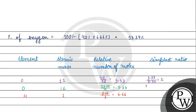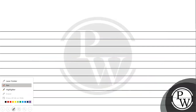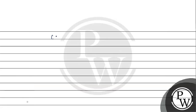Dividing by the smallest mole ratio value of 3.33: carbon gives 3.33/3.33 = 1, hydrogen gives 6.66/3.33 = 2, and oxygen gives 3.33/3.33 = 1. So the ratio of carbon to hydrogen to oxygen is 1:2:1, giving the empirical formula CH₂O.